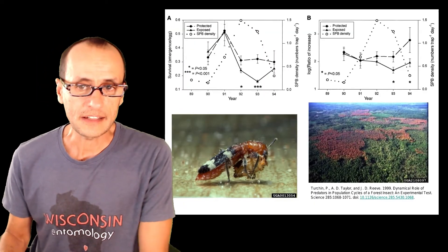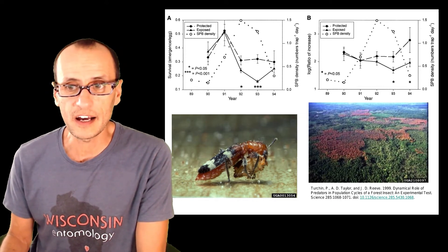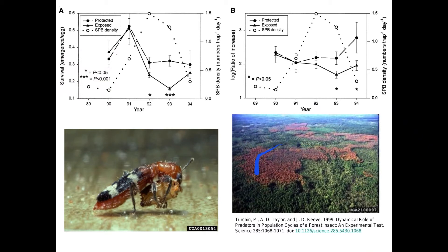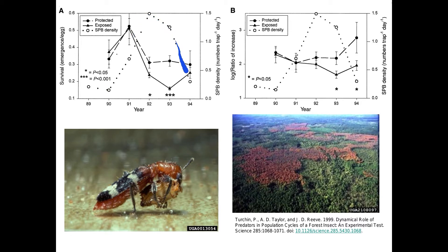Here's another example looking at bark beetles. Bark beetles are eruptive insects. These brown and red areas are dead trees that have been fed upon by bark beetles. One pattern noted by this group of researchers is that when you look at the population abundance of the southern pine beetle over time, population abundance was low for several years, then increased significantly, and then decreased as the outbreak tapered off. Part of population ecology is trying to understand what causes these fluctuations.